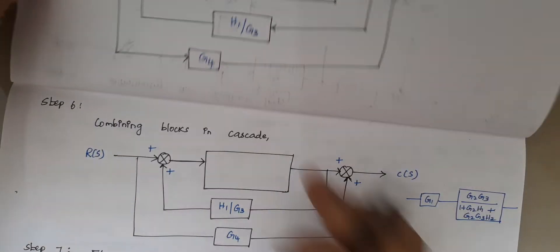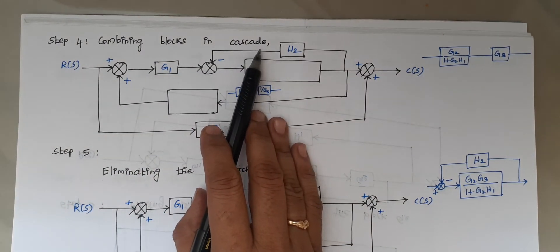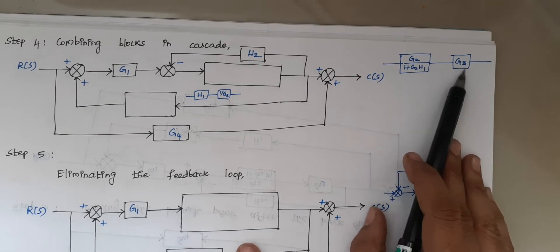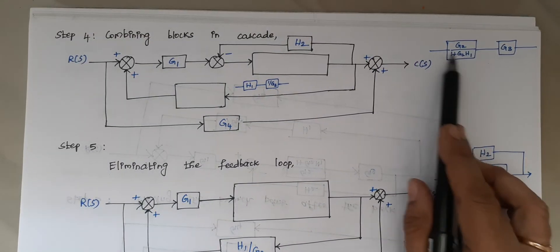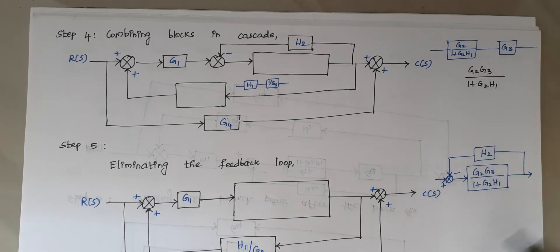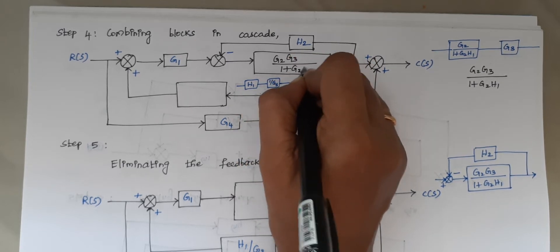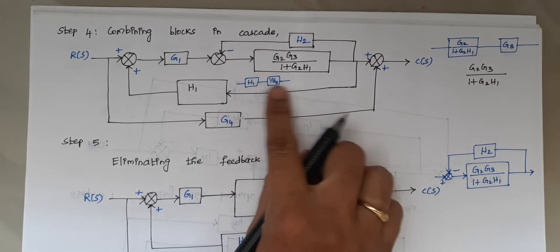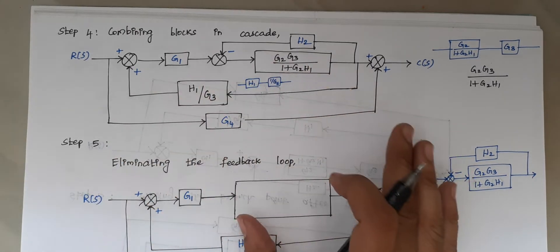Step 4 is combining blocks in cascade. Since we moved the branch point, two blocks are now in series. To combine blocks in series, we simply multiply the elements: G2*G3 divided by 1 plus G2*H1. In the feedback path, H1 and 1/G3 are in series, so we multiply them to get H1/G3.